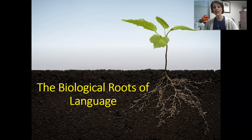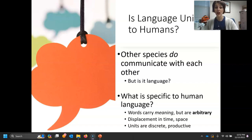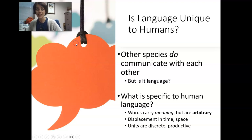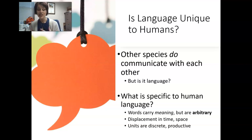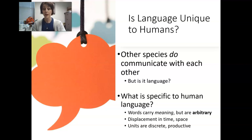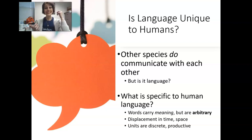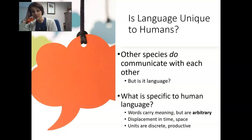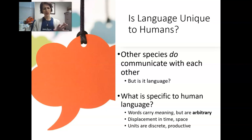Humans are unique in that we are the only species capable of producing language. Other animal species do communicate with each other, but we should ask: is it a communication system or is it actually a language? When we talk about language, there are a couple of things that separate language from a mere communication system.